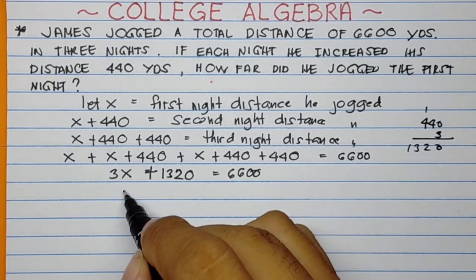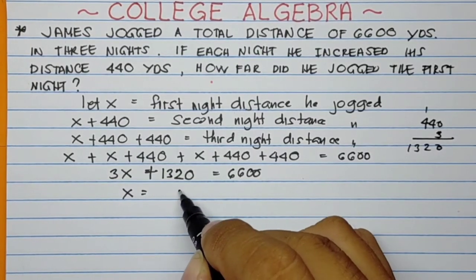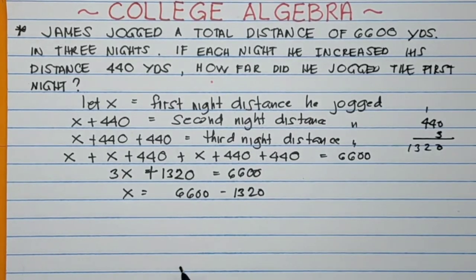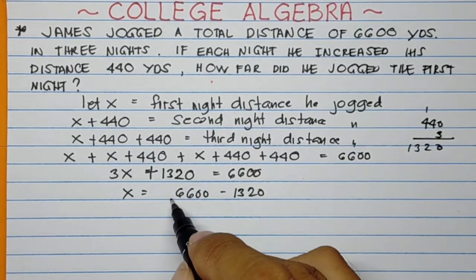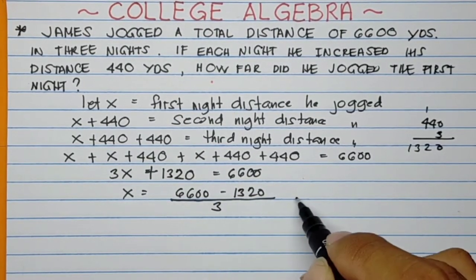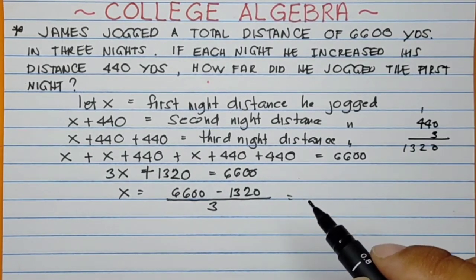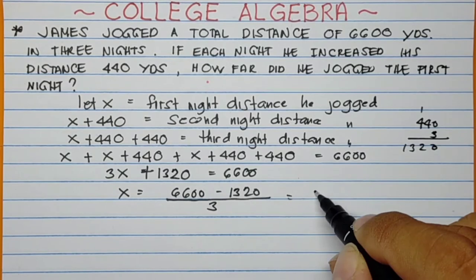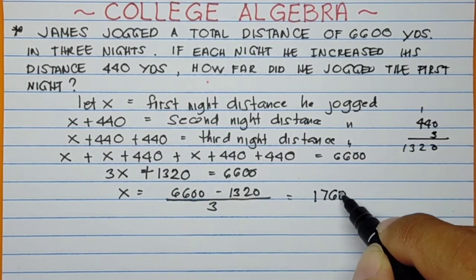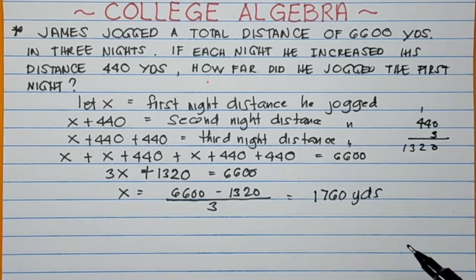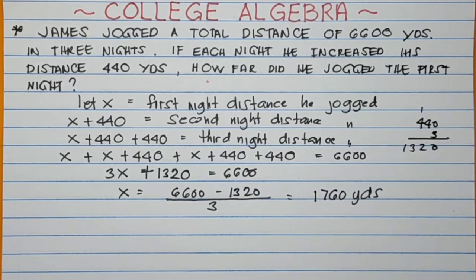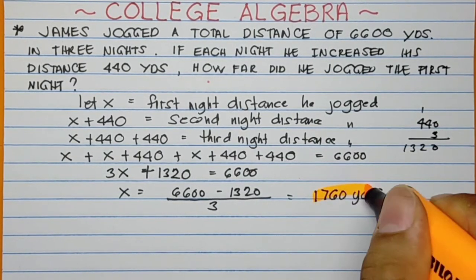So X equals 6,600 minus 1,320. So this one goes to the denominator. So the answer will be 1,760 yards. So that is the distance he covered on the first night. So it's the final answer.